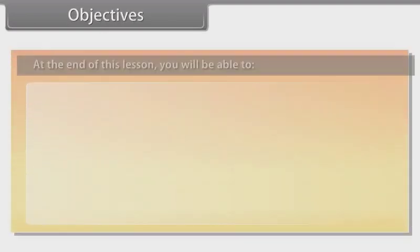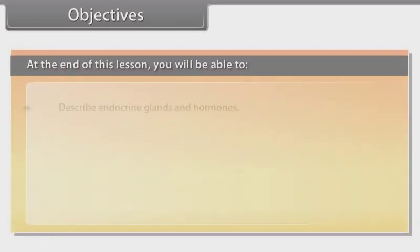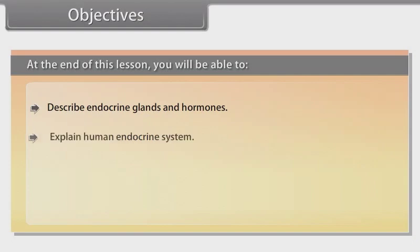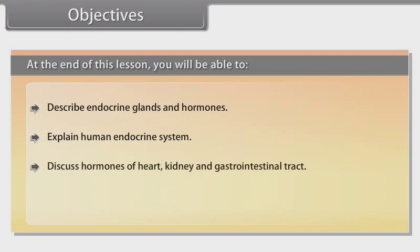At the end of this lesson you will be able to: describe endocrine glands and hormones, explain the human endocrine system, discuss hormones of heart, kidney and gastrointestinal tract, and describe the mechanism of hormone action.